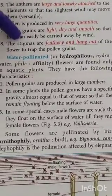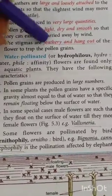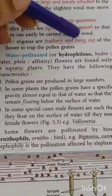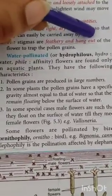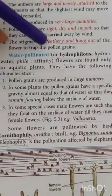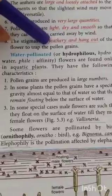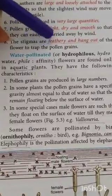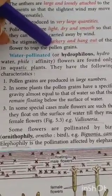The stigma in such wind-pollinated flowers is feathery and usually hangs out of the flower. It has feathery, hair-like structures so that when pollens fall on it, they get stuck there.